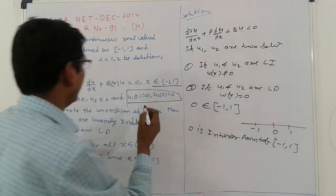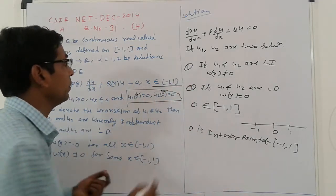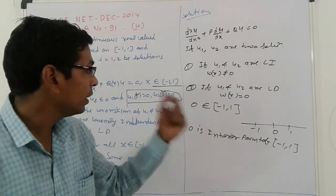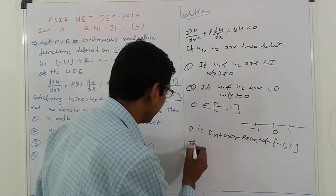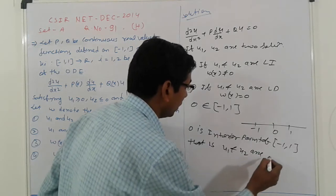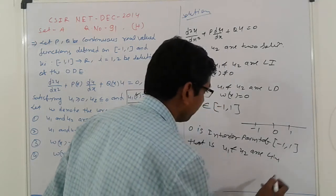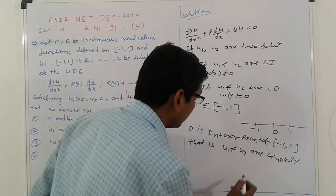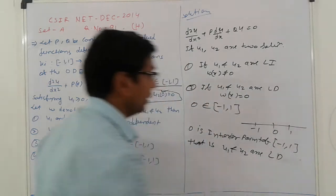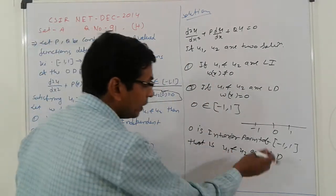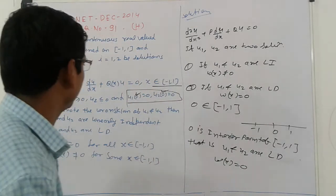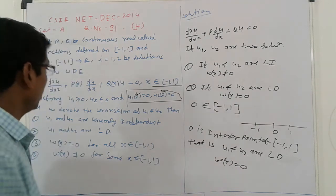That is U of 0, here and here. It means which is vector. U1 and U2 are linearly dependent. It means U1 and U2 are linearly dependent. Simple. So U1 and U2 are linearly independent. That case, Raskian is equal to 0. Here conditions, U1 and U2 are linearly independent, Raskian is equal to 0.